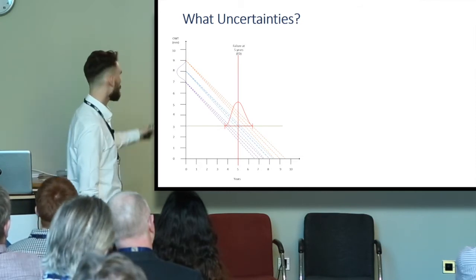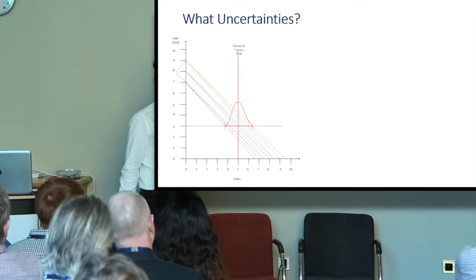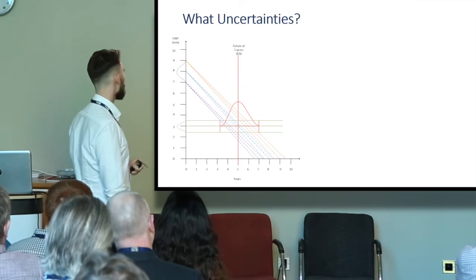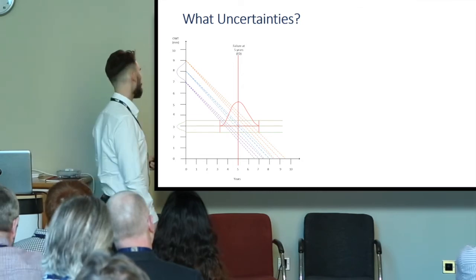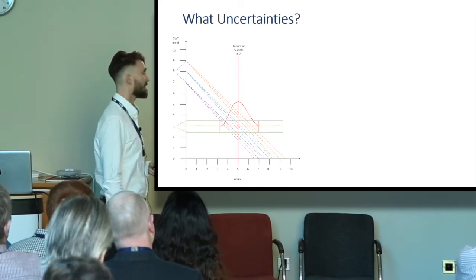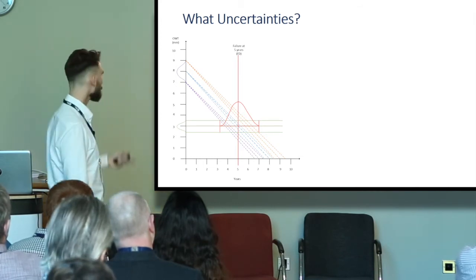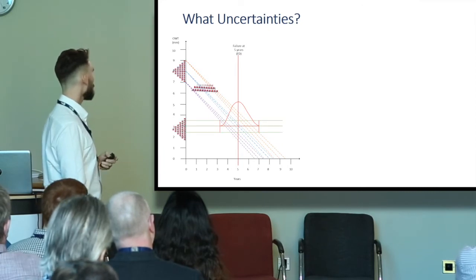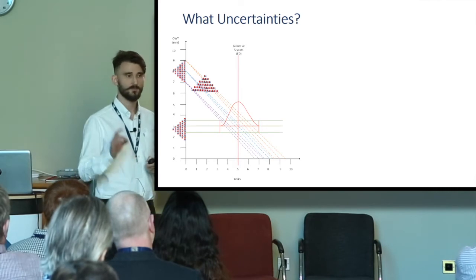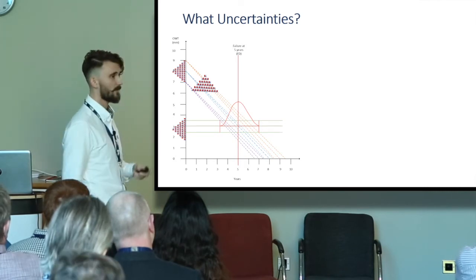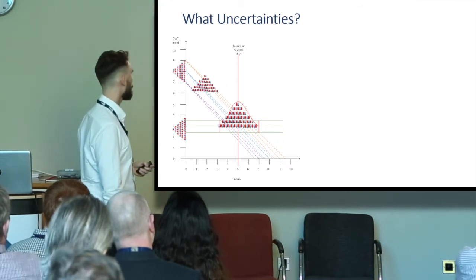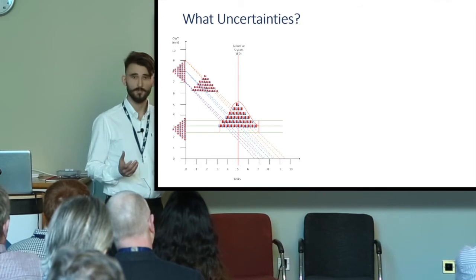Once I add in these uncertainties together, you start to see that we no longer have this definite failure point of five years. We actually have this range building up. When I put in some uncertainties surrounding the failure criteria, our range goes from three years to seven years. And actually what we see is that our inputs, instead of being defined discrete numbers, are actually very like our dice probability distributions, meaning that our output will be a probability distribution in itself.